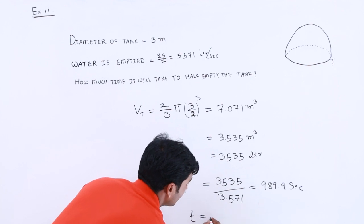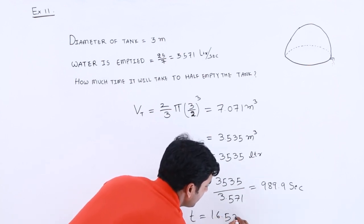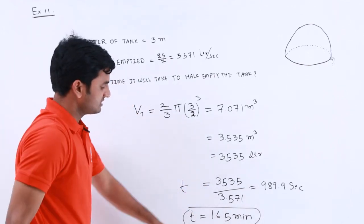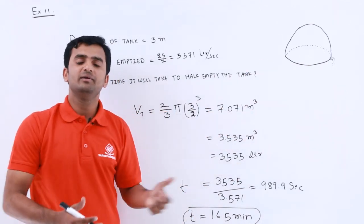So if you convert this into minutes, we will get time equal to 16.5 minutes. So this is the time which will take to half empty this hemispherical tank.